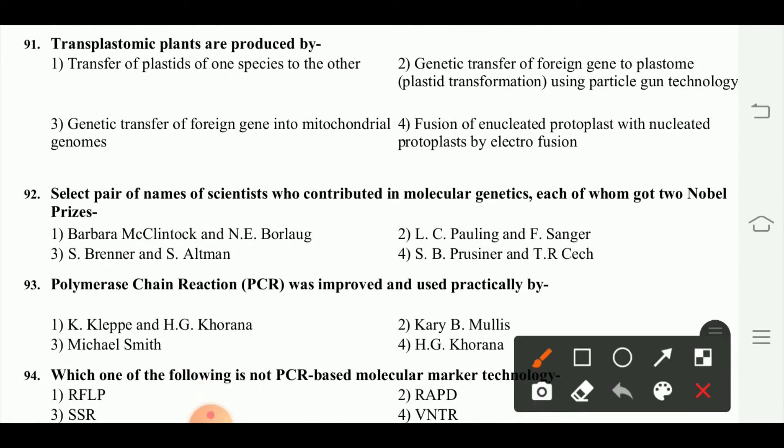Transplastomic plants are produced by genetic transfer of a foreign gene to the plastome — plastic transformation using particle gun technology. Plants produced this way are called transplastomic plants.